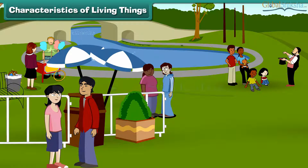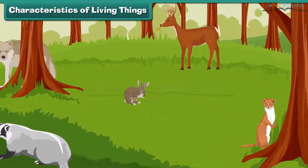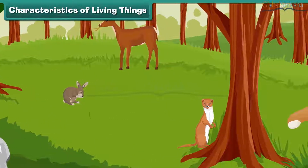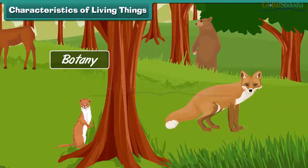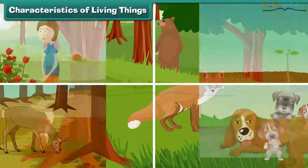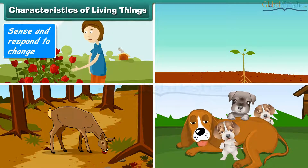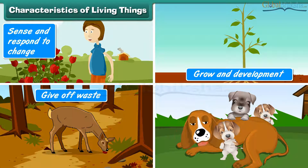Characteristics of living things: things which depict growth, reproduction, ability to sense the environment, and mount a suitable response are called living things. Plants and animals both are living. Therefore, biology deals with the study of both plants — botany — and animals — zoology. All living organisms share the following basic characteristics: sense and respond to change, growth and development, give off waste, and reproduce.